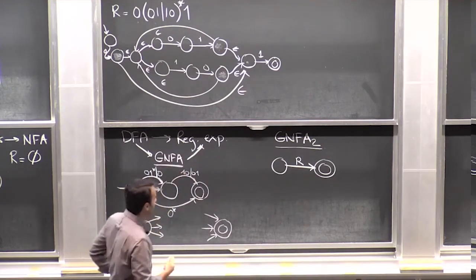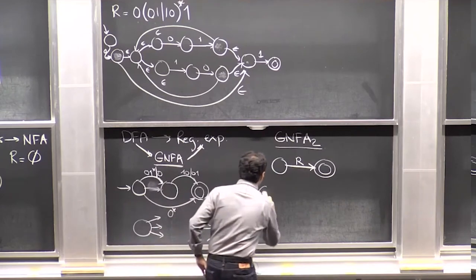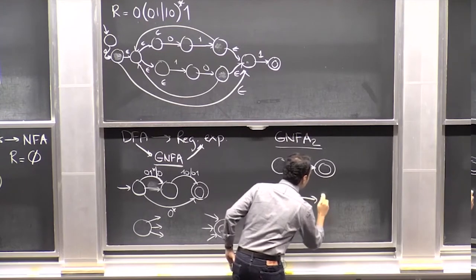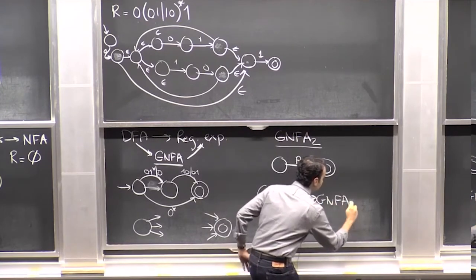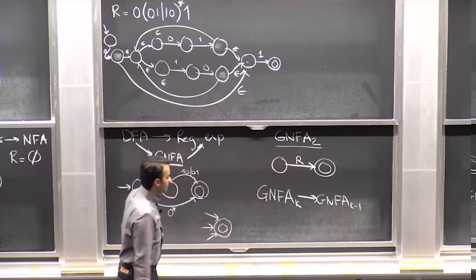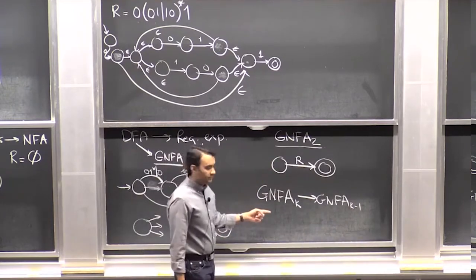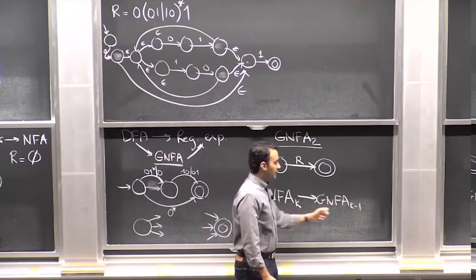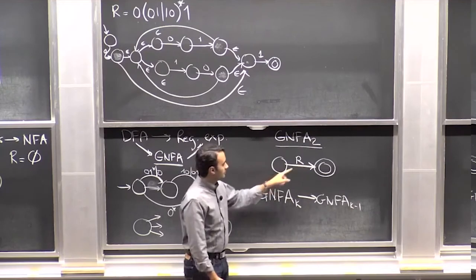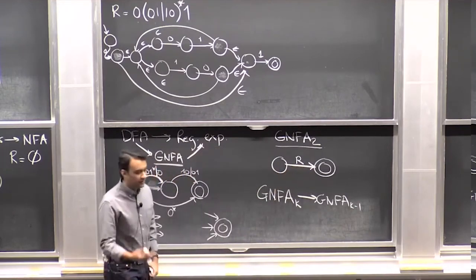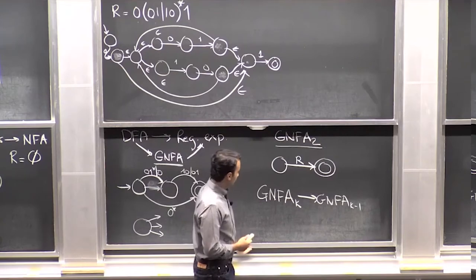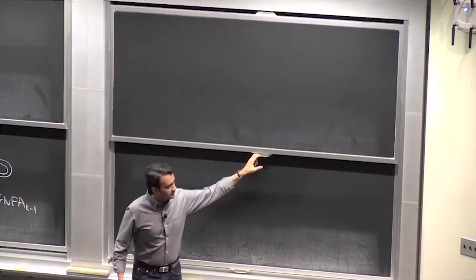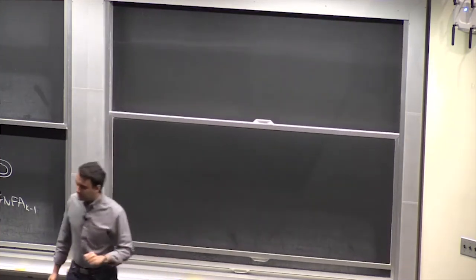We're going to convert a GNFA with k states into a GNFA with k minus 1 states. If we can show how to do this while preserving the language they accept, we can go from k down to k minus 1, and keep doing this until we get down to 2. Once we get down to 2, we just read off the regular expression from the arrow and we're done. So I just need to show how to go from a k-state GNFA to a k minus 1 state GNFA.